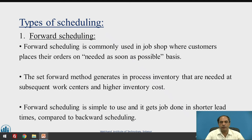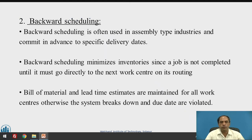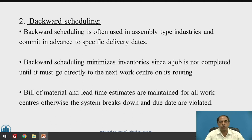The other method is backward scheduling, which is often used in assembly-type industries that commit in advance to specific delivery dates. If the customer wants delivery on a particular date, we take that as the planned delivery date. The customer may say they need to commence a particular plan by a certain date, so we must deliver by that date. We then take that date as the ultimate delivery date and do the scheduling in reverse, starting from the end date and working back to the start date. This is called backward scheduling.